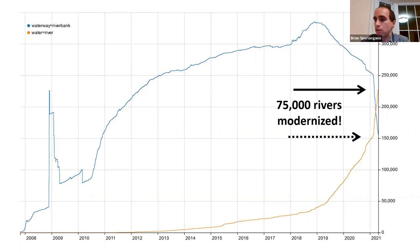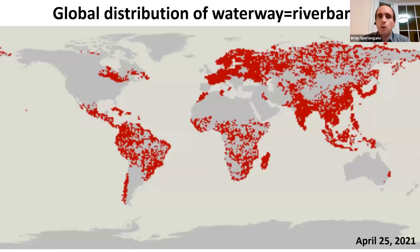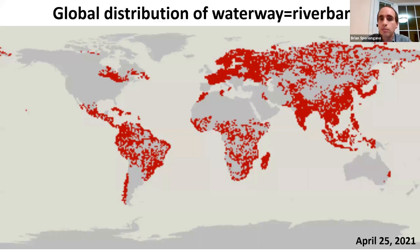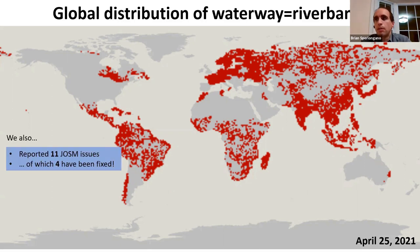This is what the world map of riverbank tagging looks like today: red dots represent places where the deprecated tag still exists, making it a global effort. We've shared these procedures with mappers from Europe and Australia who've launched similar efforts, which is why you see splotches of gray in certain areas. We've also contributed 11 JOSM bug reports, and four of them have already been fixed, making some of the river fixing quite a bit easier.